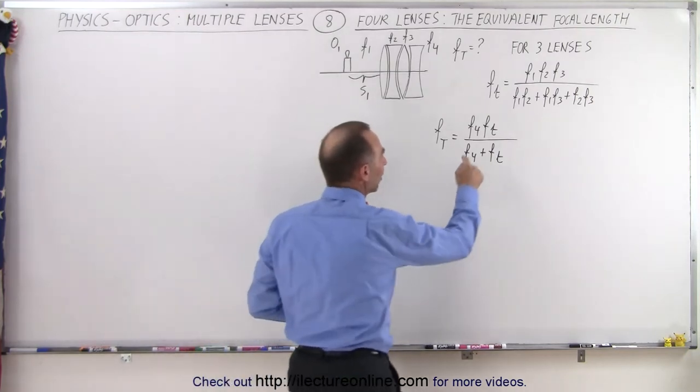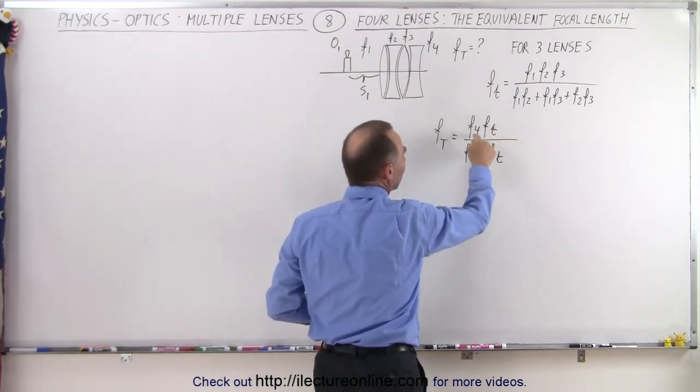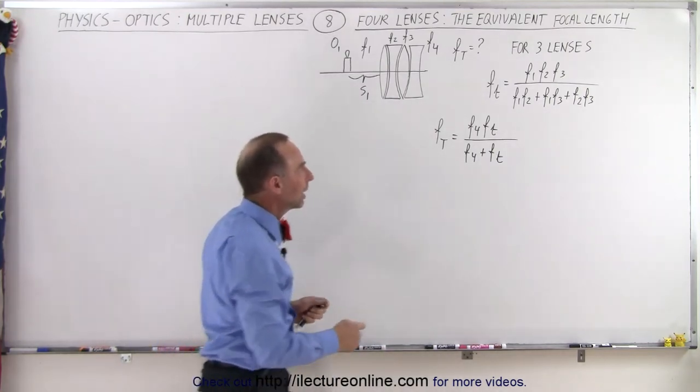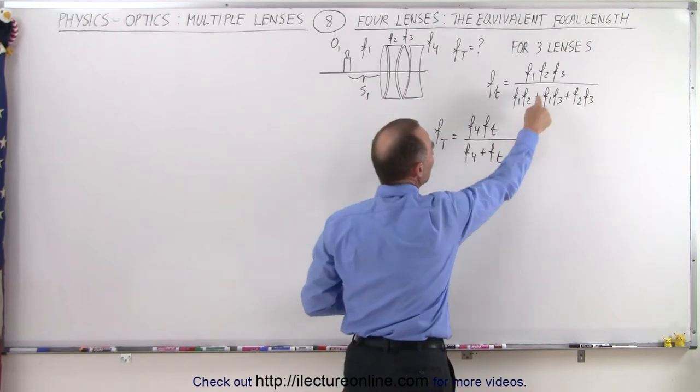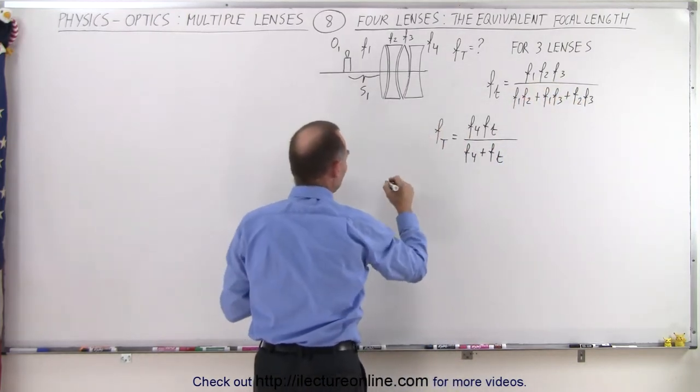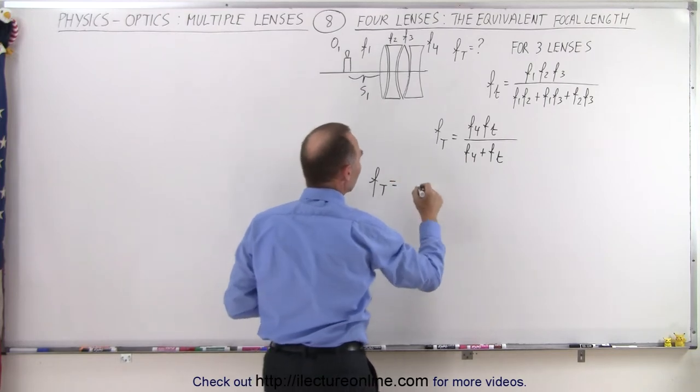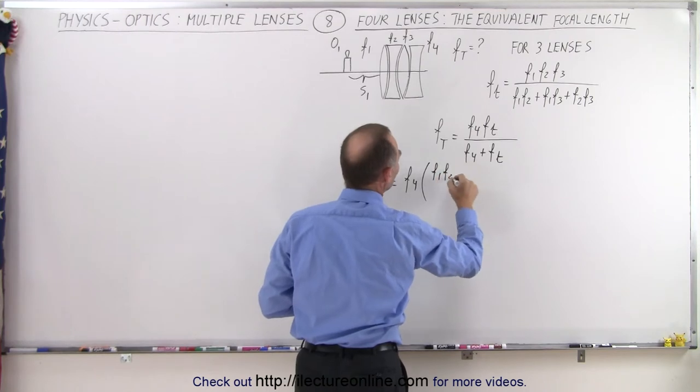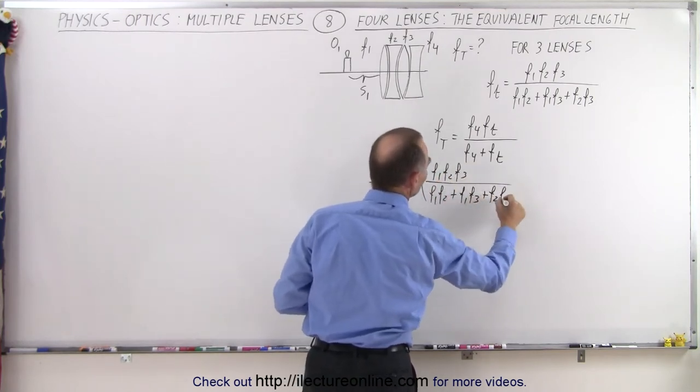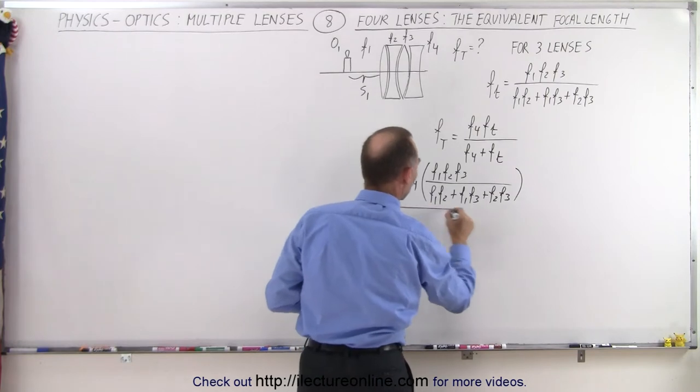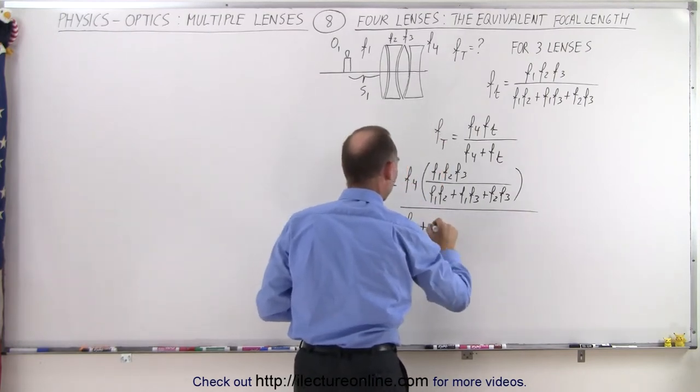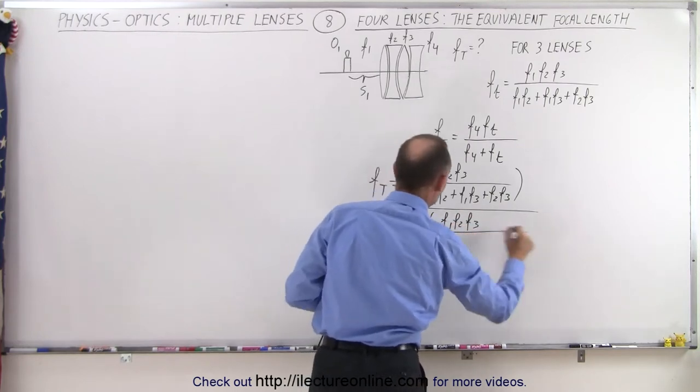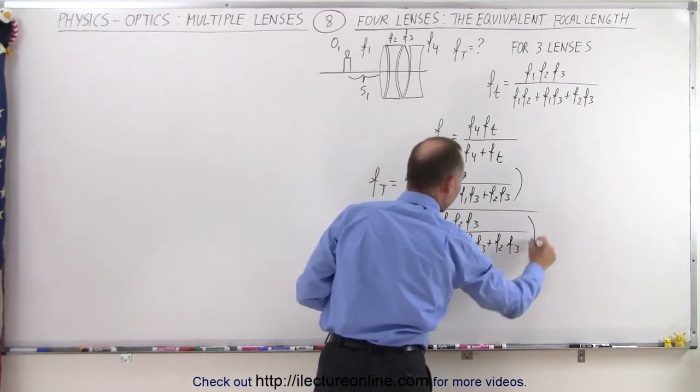The first three lenses have focal length represented by F with a small t, and then we add an additional fourth lens to that. Now we're going to replace F small t with what that equals for a three-lens system. That means the focal length for the four-lens system is equal to F4 times F1 F2 F3 over F1 F2 F3, and in the denominator we have F4 plus F1 F2 F3.